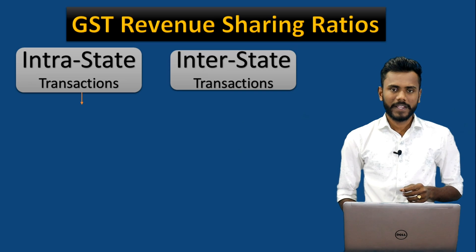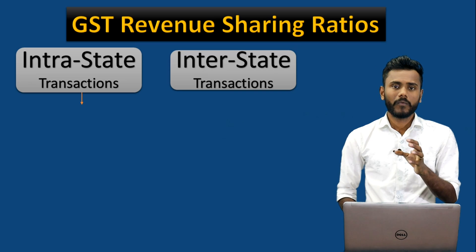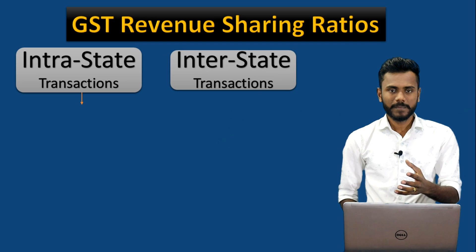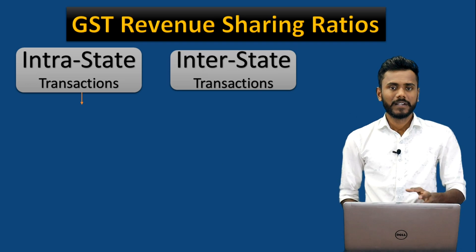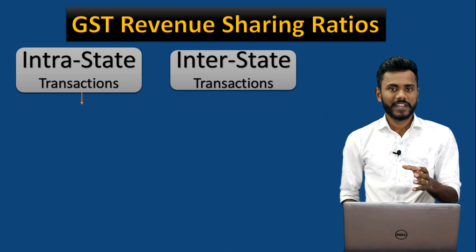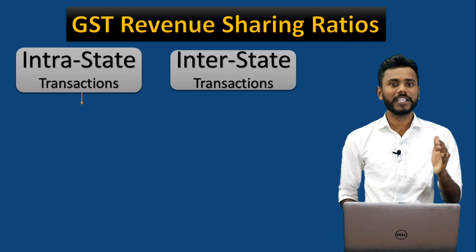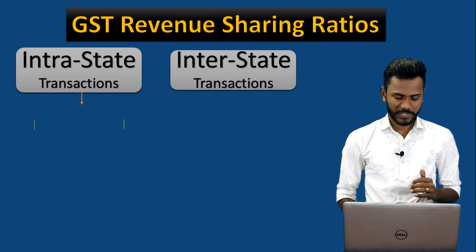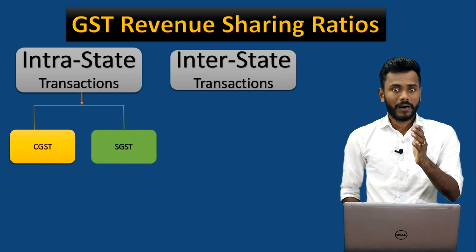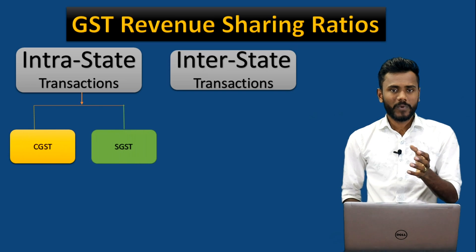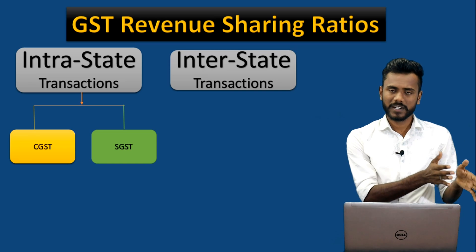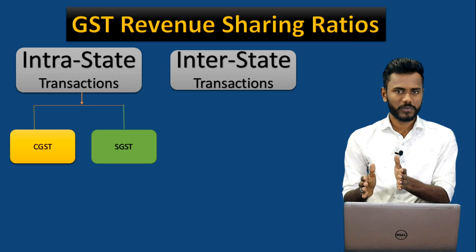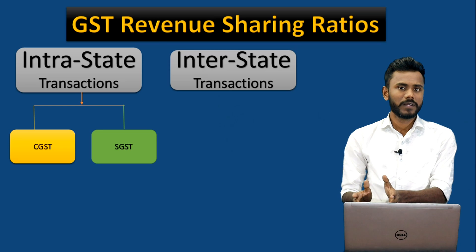On the local supply, whatever taxes are collected, the sharing ratio between the state and the central government is 50 and 50 percent. That means 50 percent of the tax revenue goes to the central government and 50 percent goes to the state government.